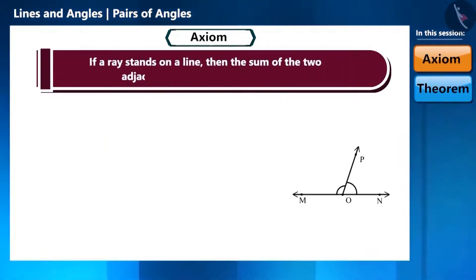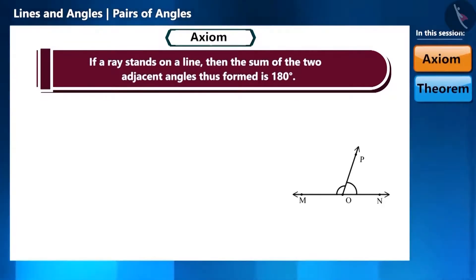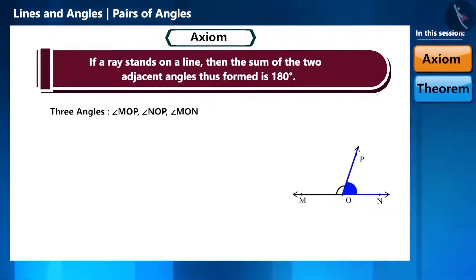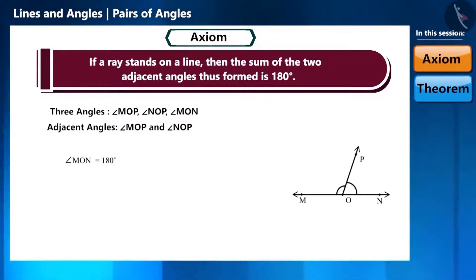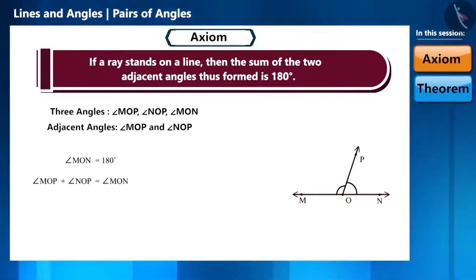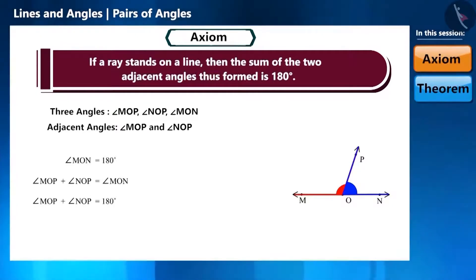Axiom: if a ray stands on a line, then the sum of the two adjacent angles so formed is 180 degrees. In the figure with angles MOP, NOP, and MON — angle MON is 180 degrees since MON is a straight line. Therefore, angle MOP plus angle NOP equals angle MON, which equals 180 degrees. When the sum of two adjacent angles is 180 degrees, they form a linear pair.